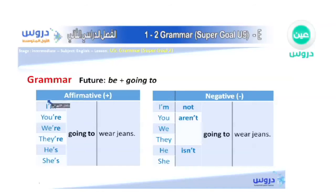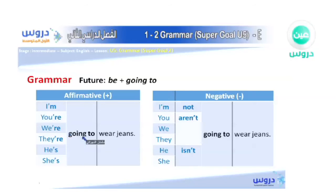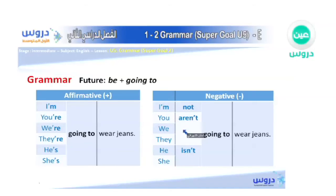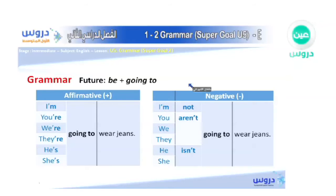As we said, we use 'be' — am, is, are — and 'going to.' For example: I am going to wear jeans; you are going to wear jeans; they are going to wear jeans; he is going to wear jeans; she is going to wear jeans. For the negative: I'm not going to wear jeans; you aren't going to wear jeans; we aren't; they aren't; he isn't going to wear jeans; she isn't going to wear jeans.